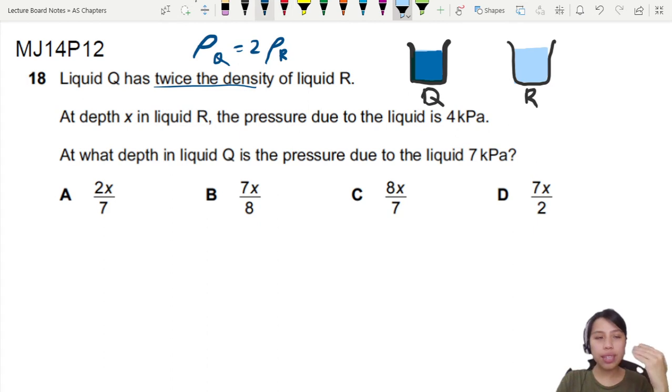So if you want to say at a certain depth, X in liquid R, pressure is 4kPa. So maybe some depth. What depth in liquid Q is the pressure 7kPa? 7 ah?